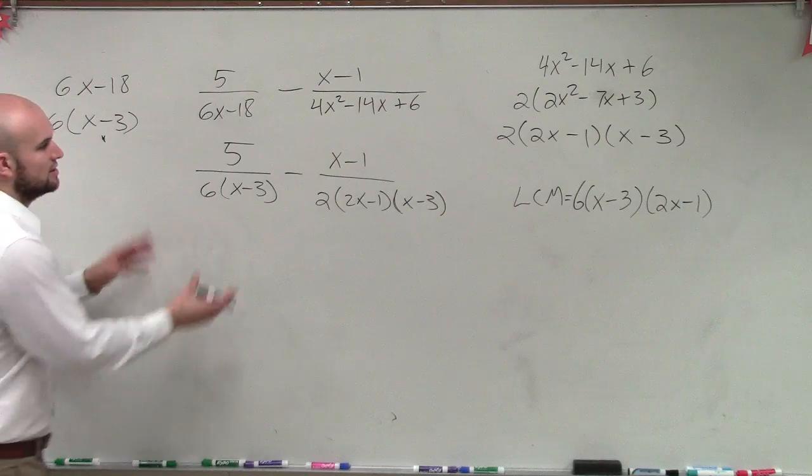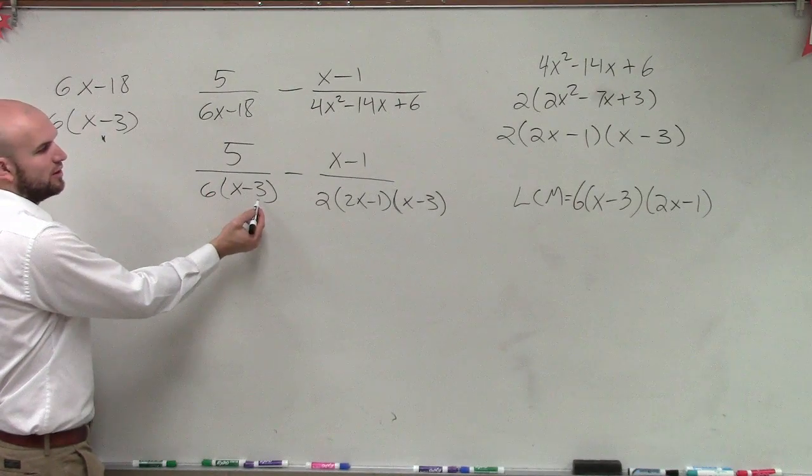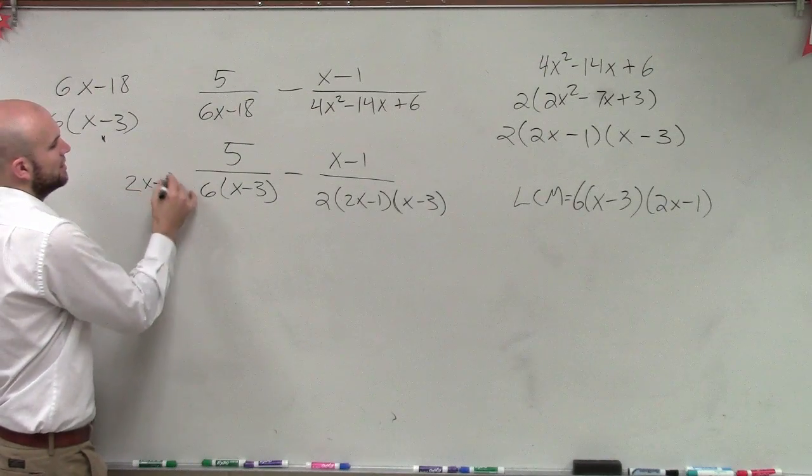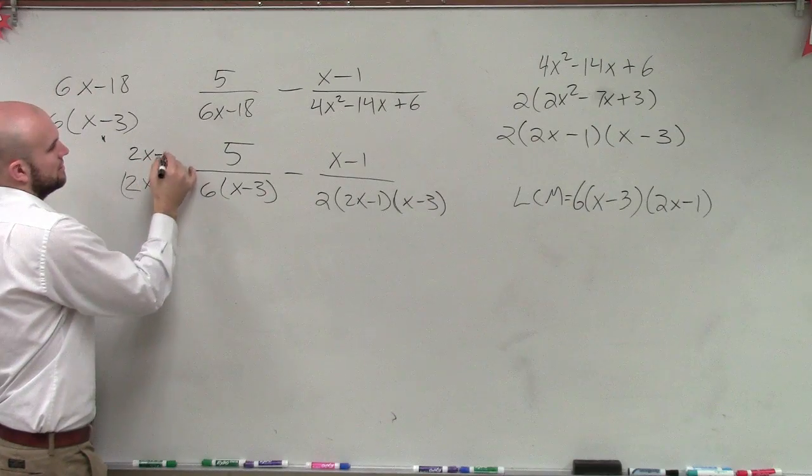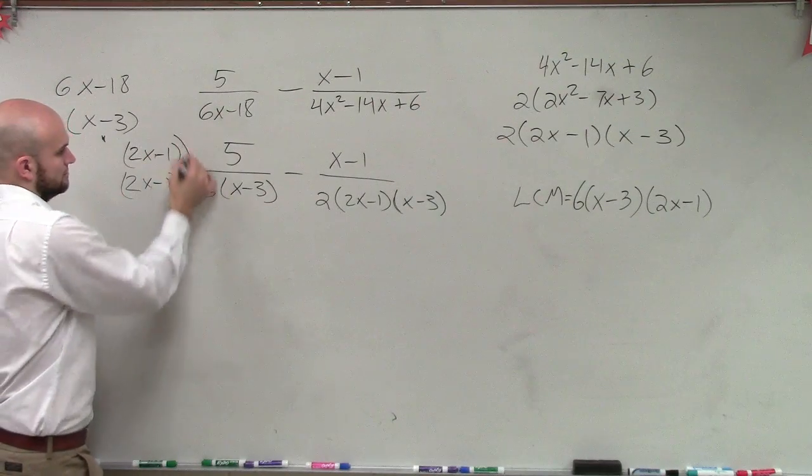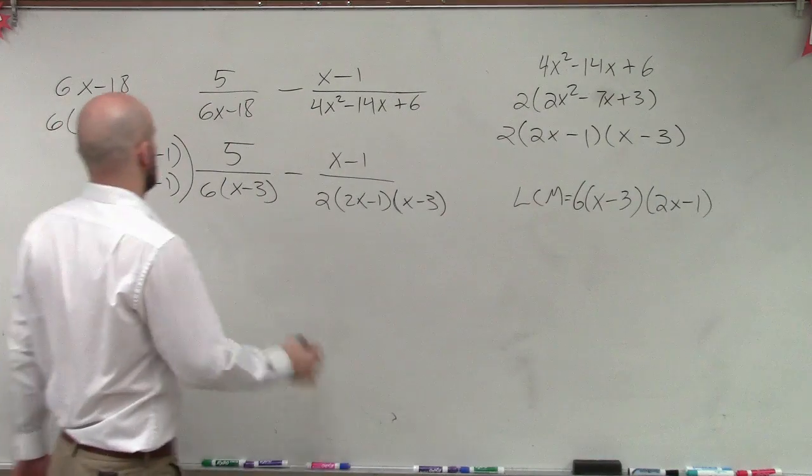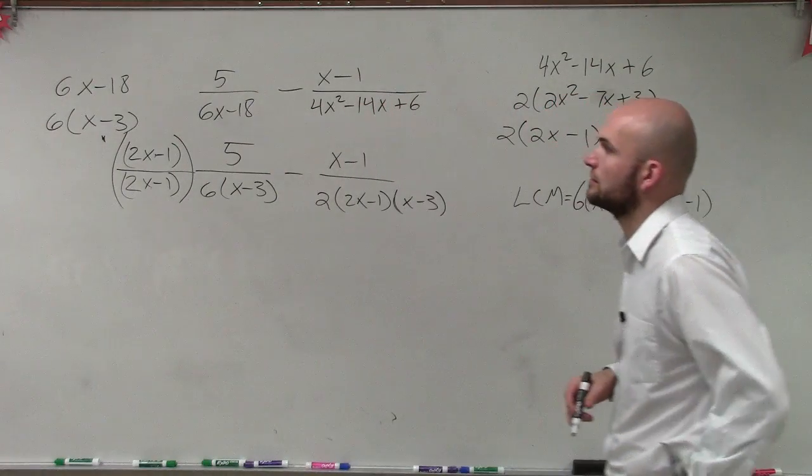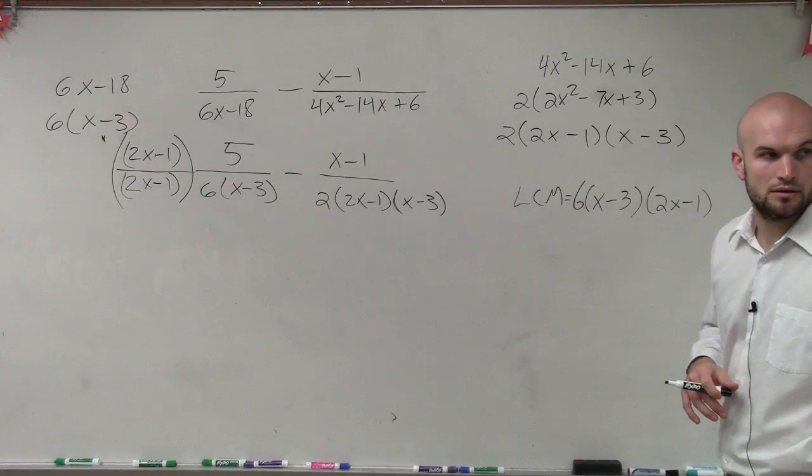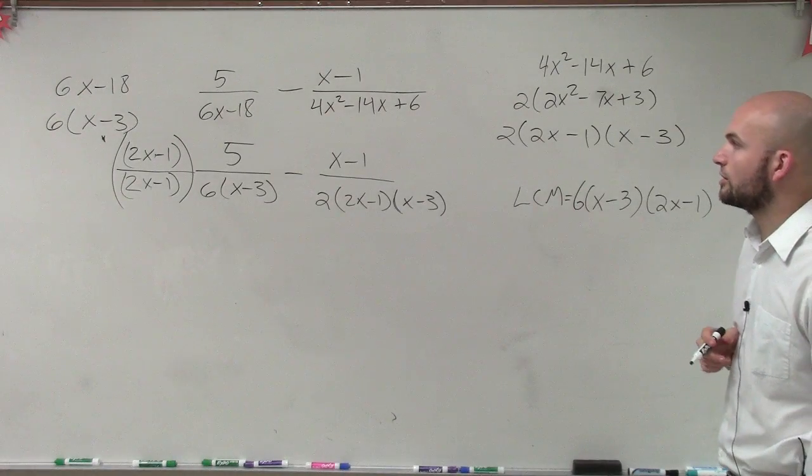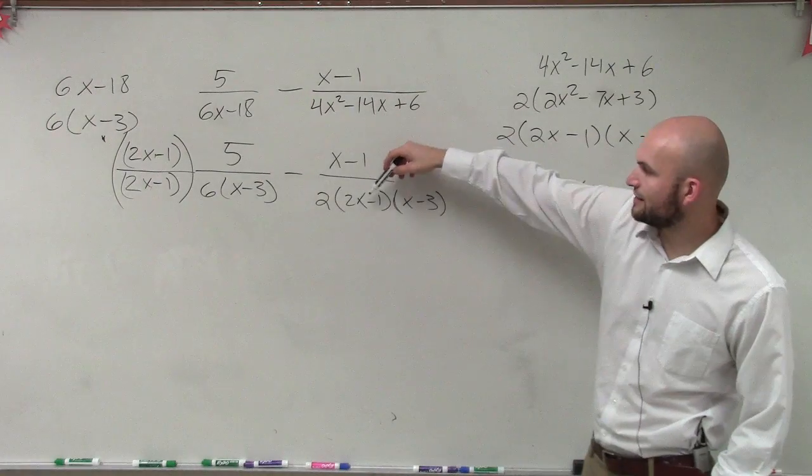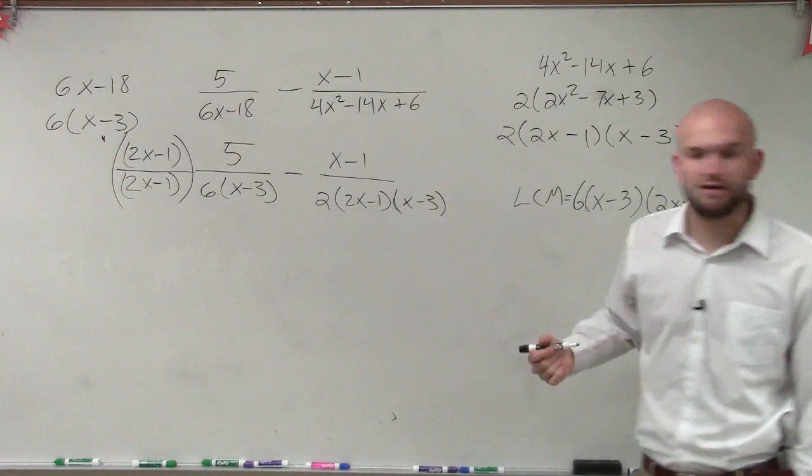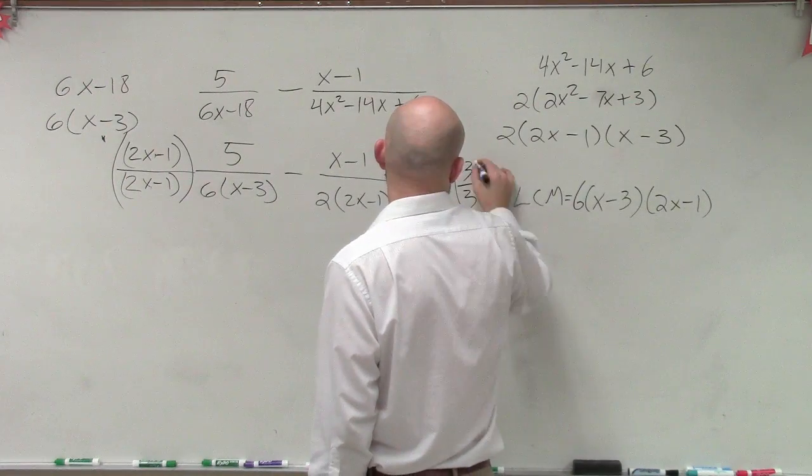Therefore, all I need to do is make sure I multiply to get both denominators to be 6 times x minus 3 times 2x minus 1. So let's work on the left side here real quick. On the left side I have 6 times x minus 3, but what do I need to multiply to make it look like my LCM? 2x minus 1. And remember, you need to multiply on the top and the bottom. Then over here, I need to multiply, so I already have the 2x minus 1, I already have the x minus 3, but I need to get the 2 to be 6, so I need to multiply by 3.